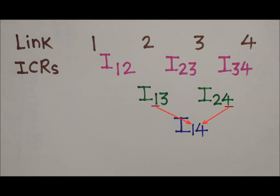This is how we have written ICR I14. In this row we cannot write any more ICRs, and all 6 ICRs are now written. By this method we can write down ICRs for a mechanism with any number of links.